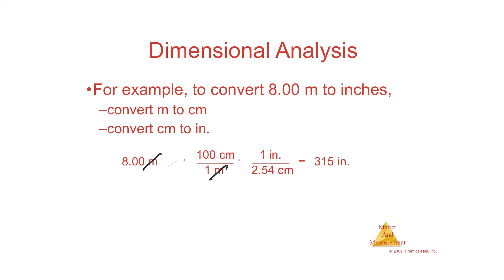Since you're not in inches yet, you do it again — a two or more step unit conversion. Put centimeters on the bottom: 2.54 centimeters to the inch. Centimeters now cancel, and the answer is in inches. So it's 8 times 100 divided by 2.54. Once you have what you've been asked for, you're finished. The answer is 315 inches.